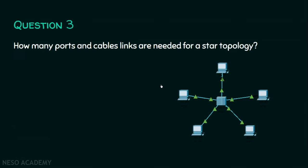Now we will see question number three: how many ports and cables are required for a star topology? In a star topology there will be a central node and every node is connected to it. If we observe a five-device example, one might say there are five ports, but that is wrong because the central device also should have a port. In the entire scenario there are ten ports, and there are five cables.